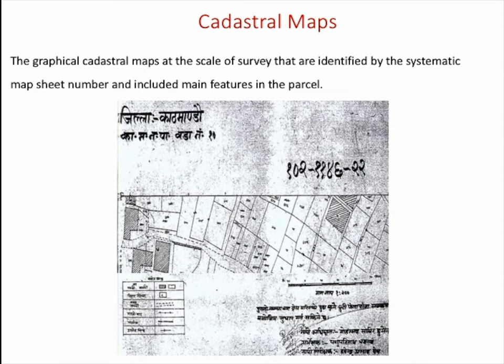What is a cadastral map? During cadastral survey, cadastral maps are prepared. It is a representation of a parcel on the ground on paper. The graphical cadastral map at different scales is identified by the map sheet number and includes main features such as roads, parcels, buildings, rivers, and forest. These are prepared after the cadastral survey, after which the field book and other records are managed.